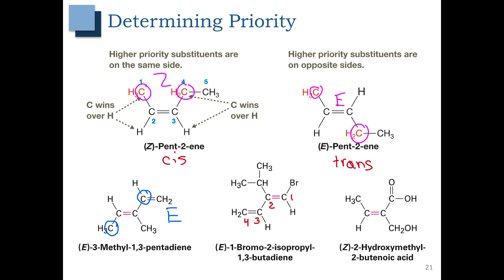Let's go ahead and determine priority. On carbon 1, we have a hydrogen and a bromine attached — bromine gets priority. On carbon 2, we have a CH group and a CH group attached, so we need to determine which one wins. The top carbon is connected to two carbons, and the bottom carbon (labeled carbon 3) is also connected to a carbon with a double bond, which counts as two carbons. Even if you have a double bond, it counts as two carbons and breaks the tie — in this case over an isopropyl group. These groups are on opposite sides, so we have E stereochemistry.